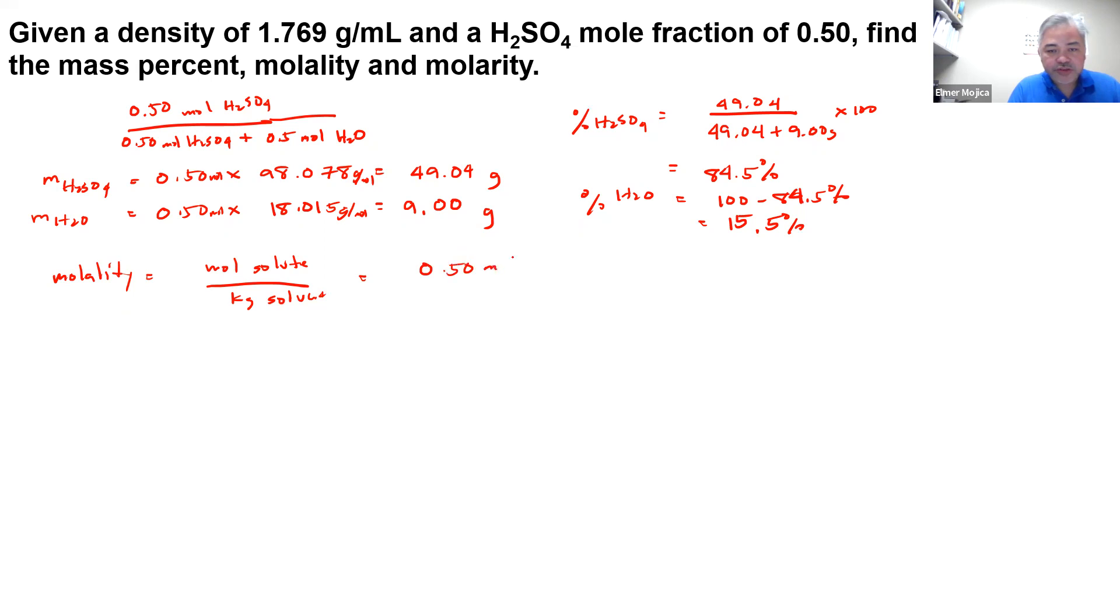And all we need to do is convert the 9 grams that we have here into kilograms. So for every 1 kilogram, we have 1,000 grams. So if you have that, 0.5 divided by 0.009. So you will get around 55.6 molal.